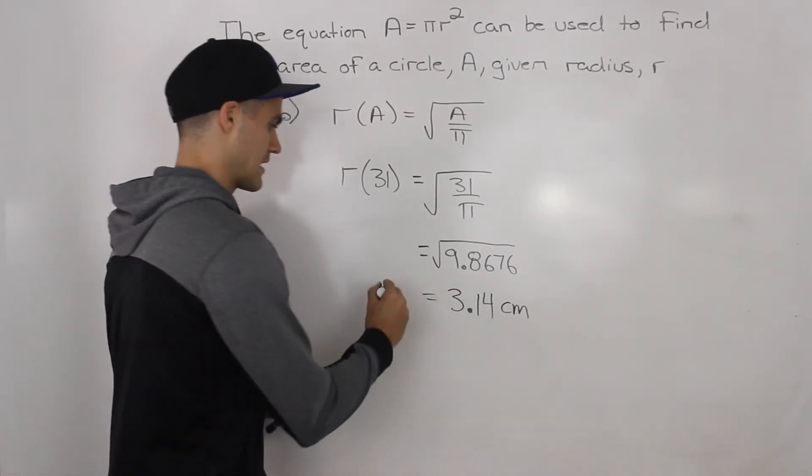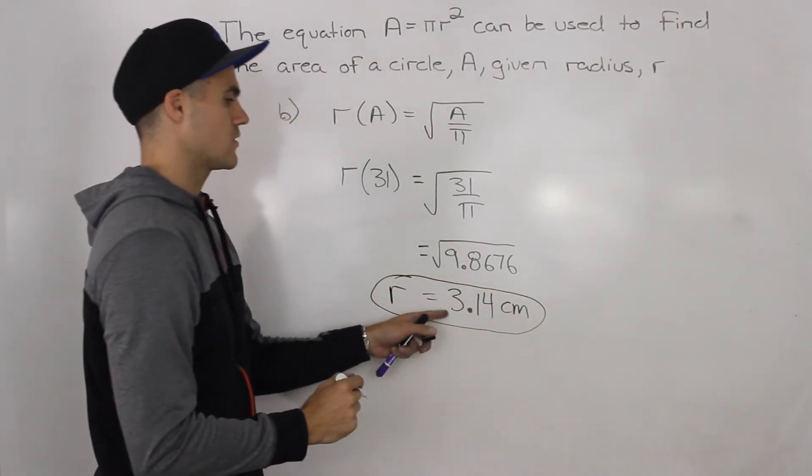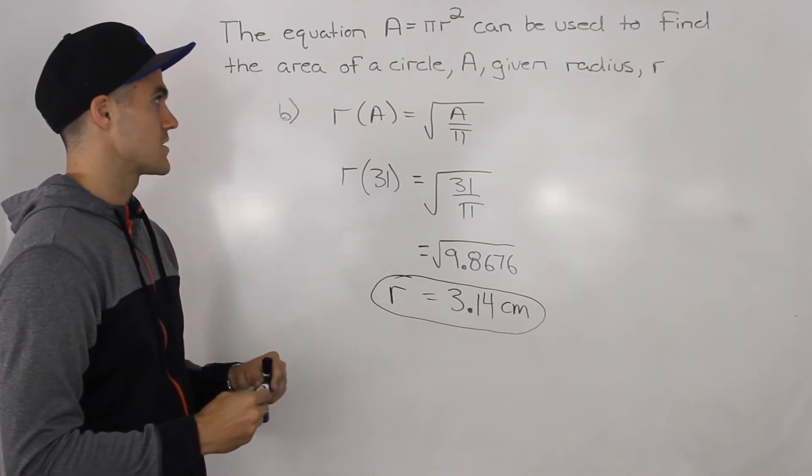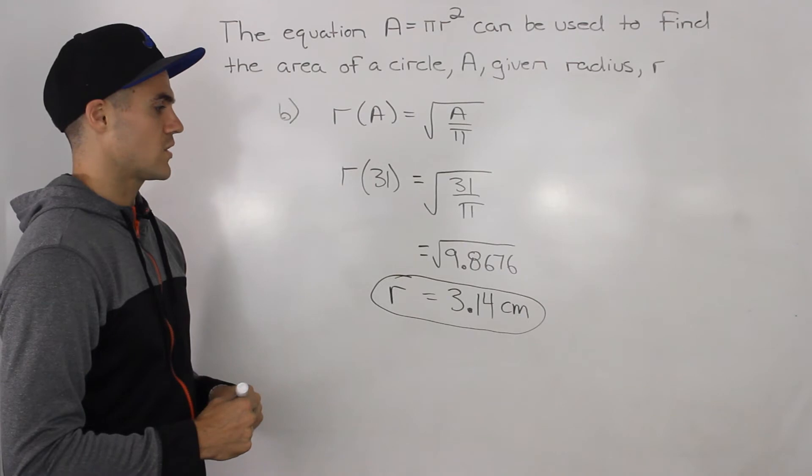So that is the radius of a circle, 3.14 centimeters, if its area is 31 centimeters squared.